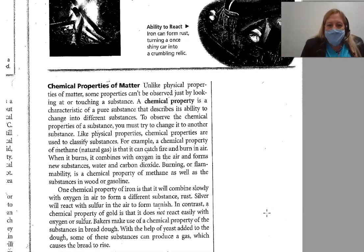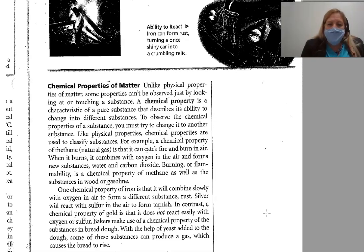Unlike physical properties, some properties can't be observed just by looking at or touching a substance. A chemical property is the characteristic of a pure substance that describes its ability to change into different substances. To observe the chemical property of a substance, you must try to change it to another substance. Like physical properties, chemical properties are used to classify substances. For example, a chemical property of methane (natural gas) is that it can catch fire and burn. When it burns, it combines with oxygen in the air and forms new substances — water and carbon dioxide. Burning or flammability is a chemical property of methane, as well as substances in wood or gasoline.